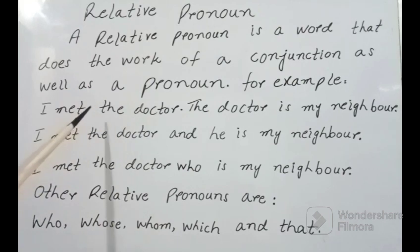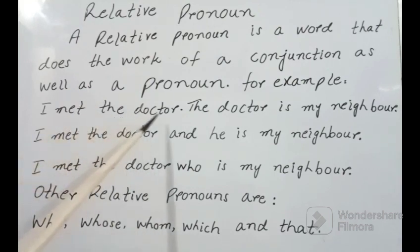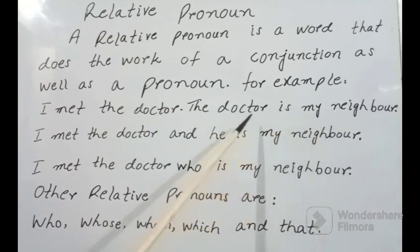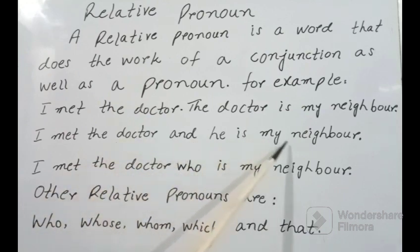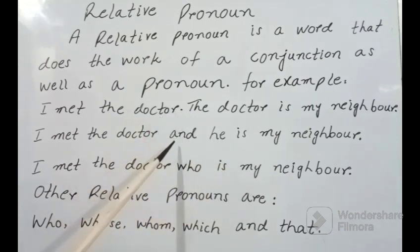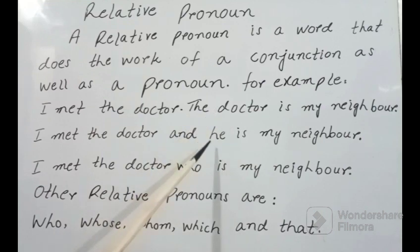For example: 'I met the doctor' — مین ایک doctor سے ملی. 'The doctor is my neighbor' — Doctor میرا ہمسایا ہے. In place of a full stop, we continue the sentence: 'I met the doctor, and he is my neighbor.' یہاں پہ ہم نے conjunction 'and' لگایا اور ڈاکٹر کی جگہ pronoun 'he' use کیا.